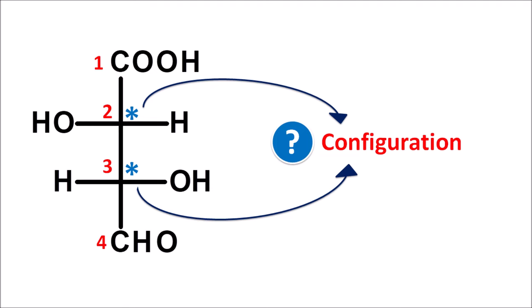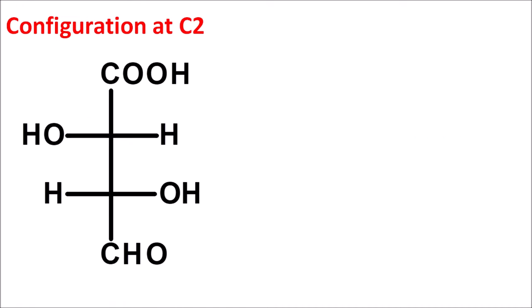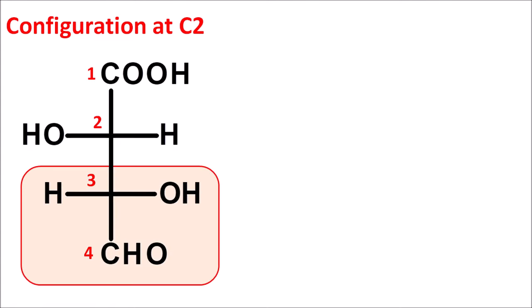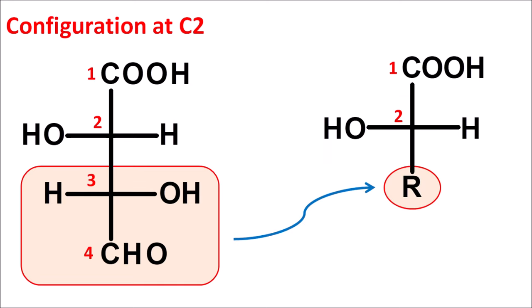Let us assign the configuration initially at C2. What is the configuration at C2? Let us take the structure like this with the numbering shown. In order to assign the configuration at C2, let us consider the entire group attached to C2 as a single group. We can write the structure like this where the R group indicates the entire group attached to the second carbon. By considering the large group as a single group, we can easily assign R and S configuration at a particular chiral carbon.